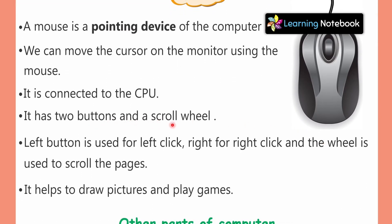The mouse has two buttons and a scroll wheel. There are left and right buttons. The left button is used for left click and the right button is used for right click. The scroll wheel is used to scroll the pages — for example when we read a document or browse a website we can scroll up and down. The mouse also helps us to draw pictures and play games.